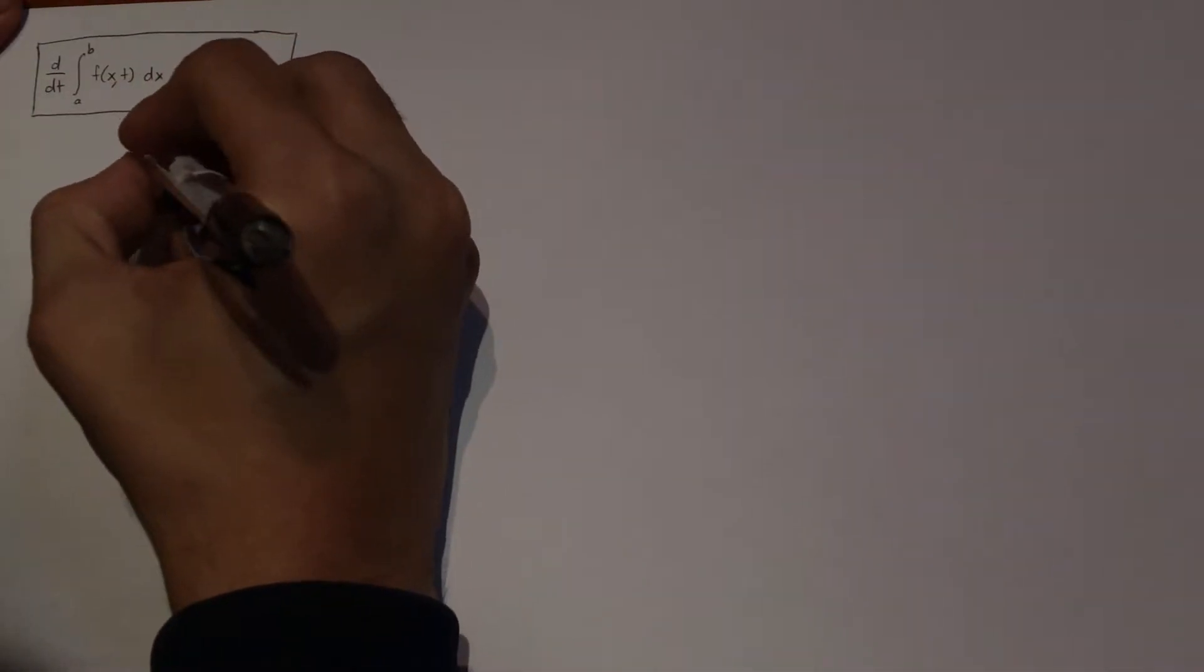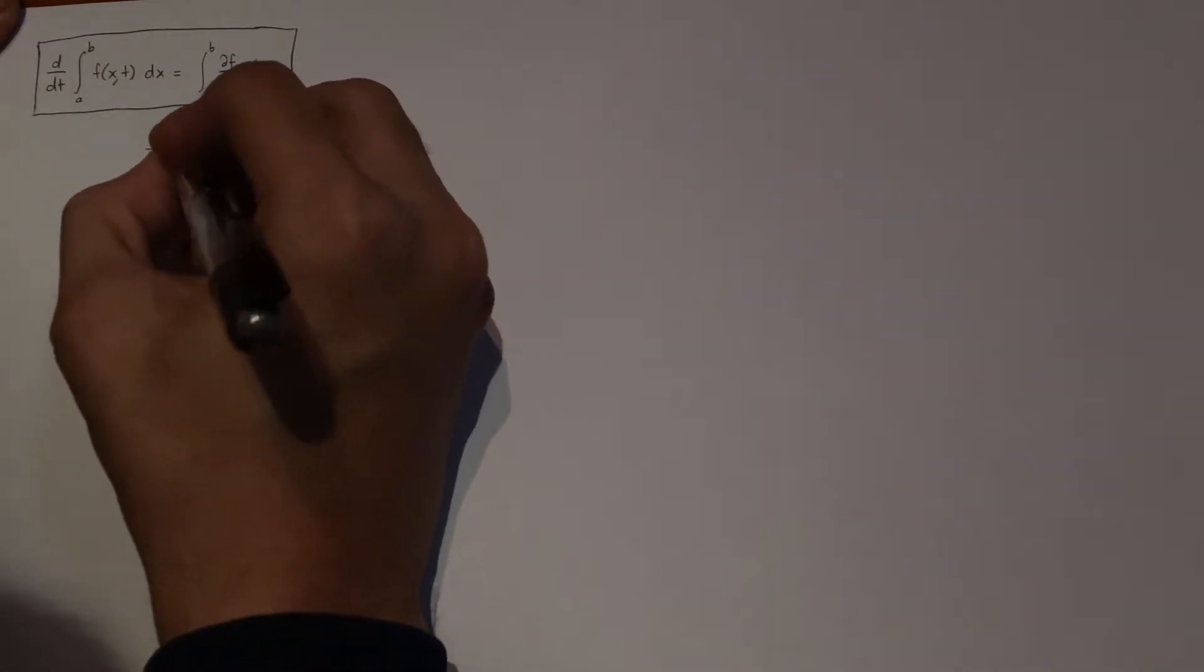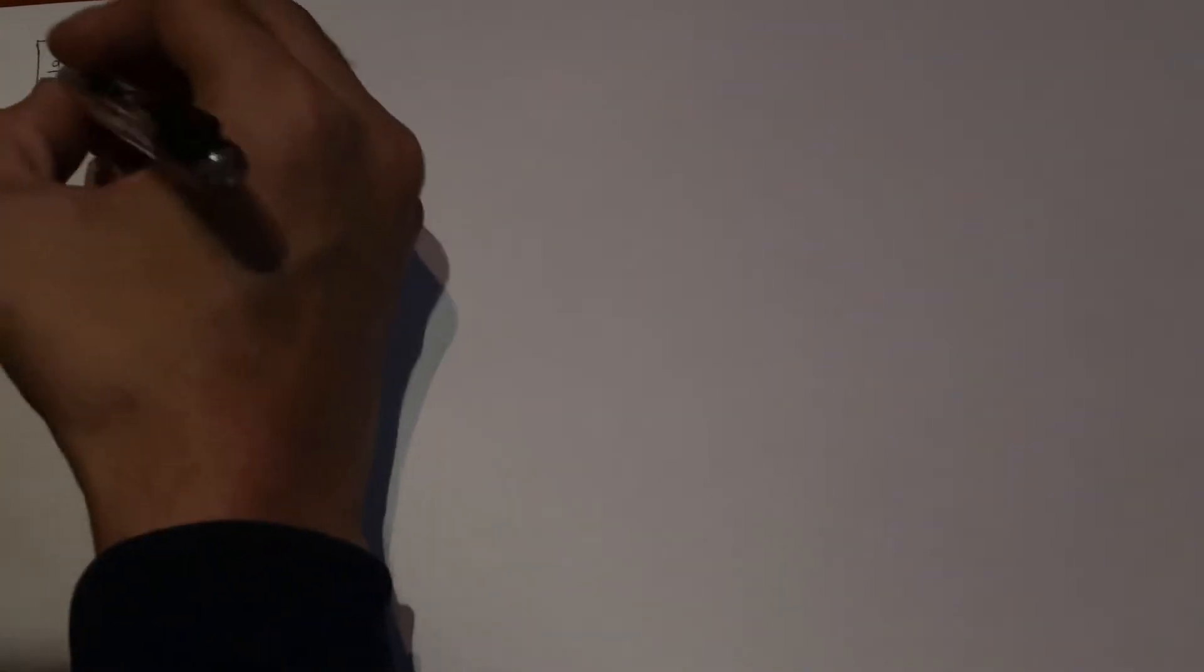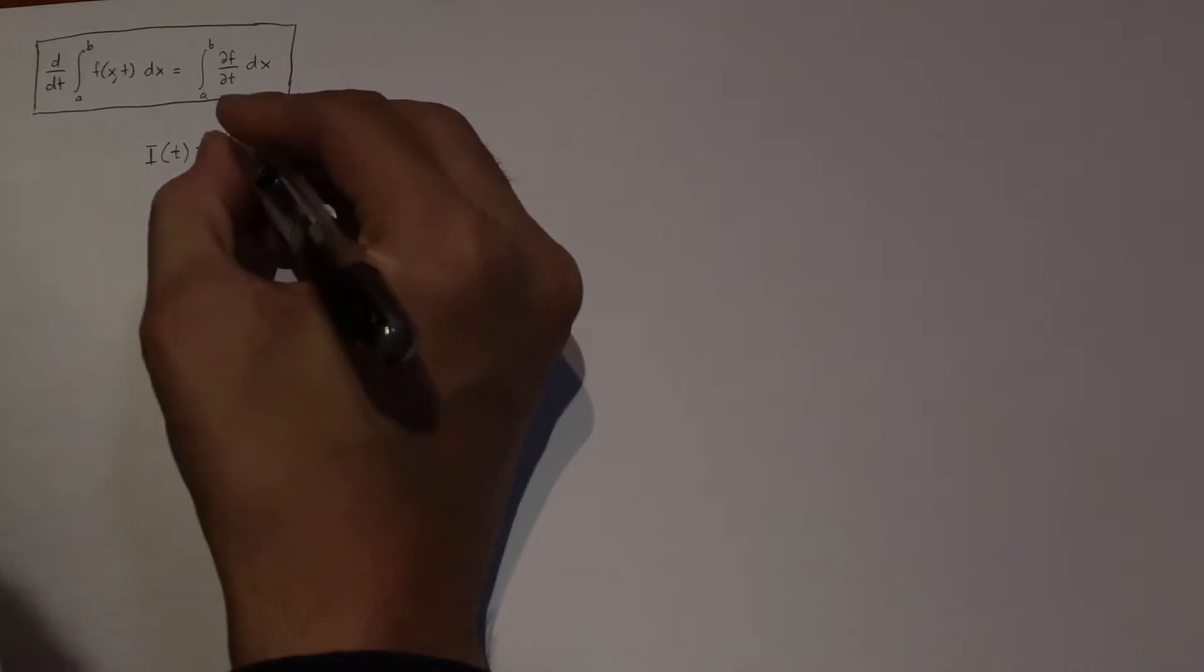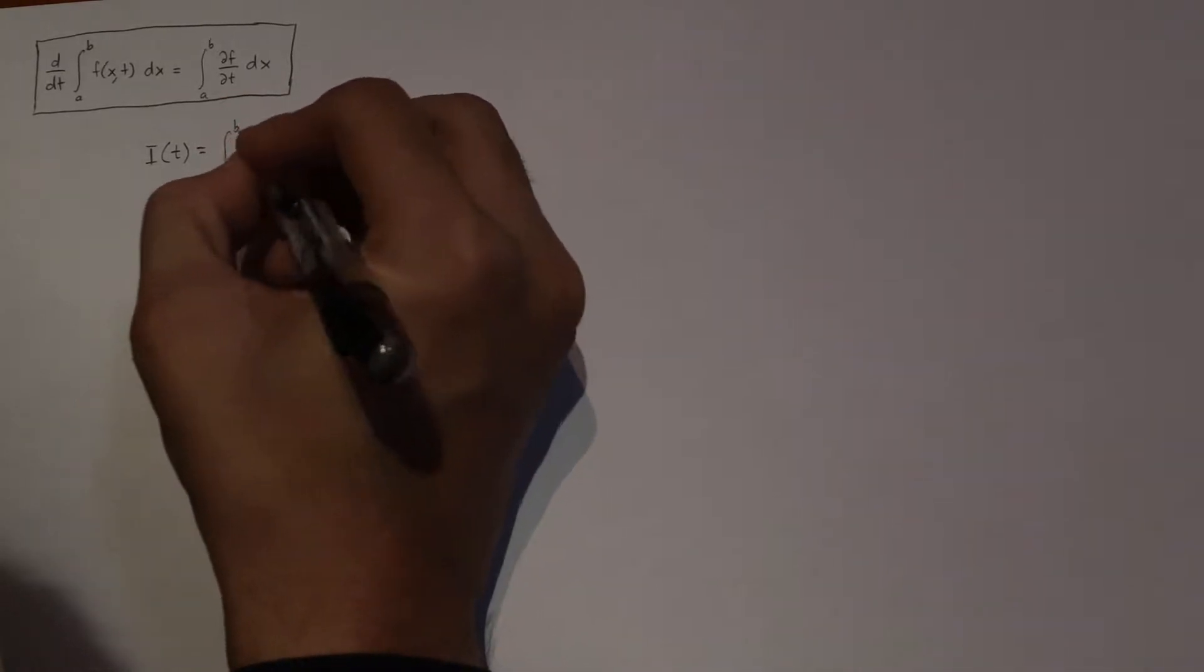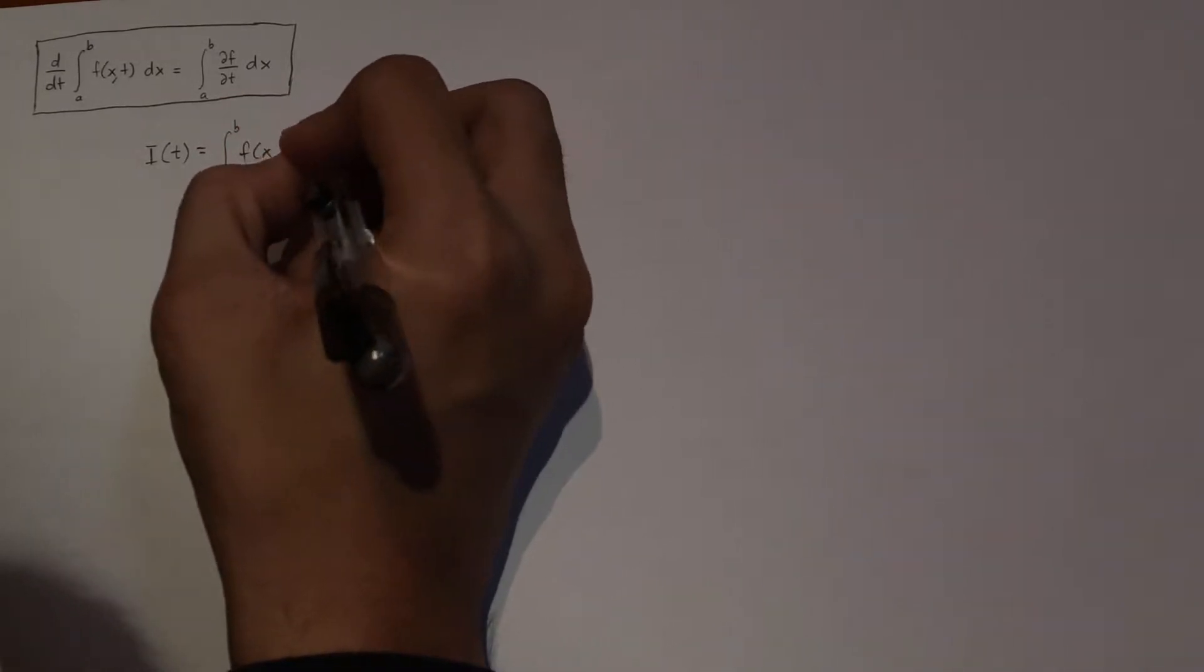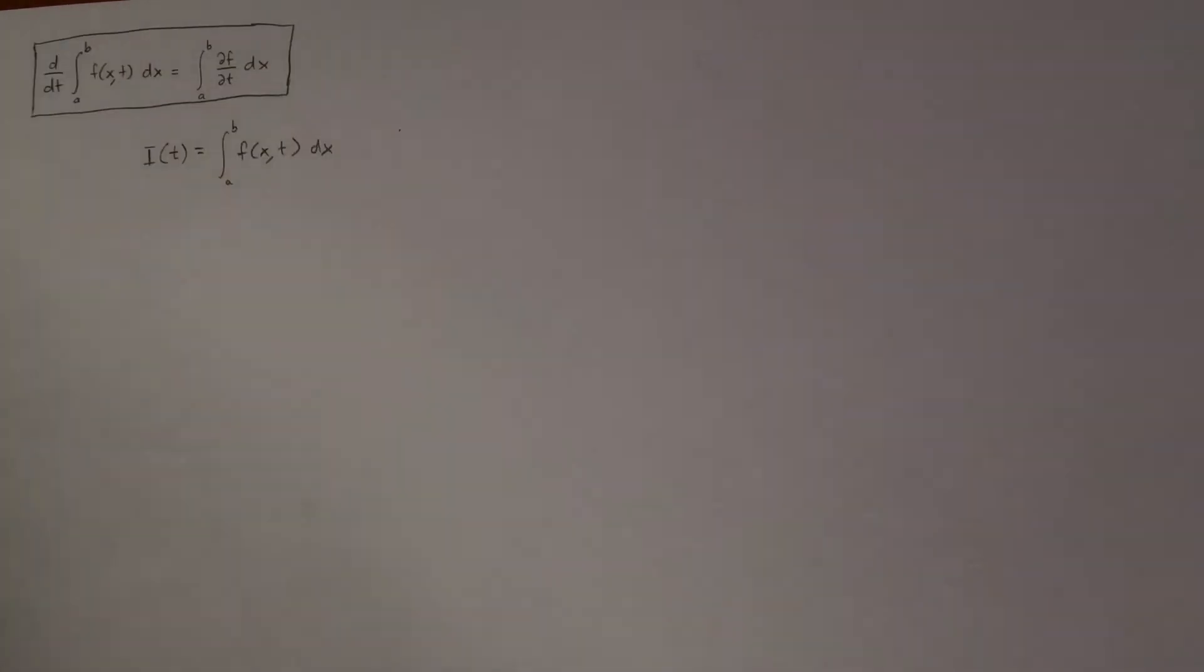Anyways, so first what we're going to do is we're going to define a function. I'm going to define a function called I, which stands for integral. And it's going to be a function which depends on T. And this will equal to just this integral that's inside. So we're just equal to the integral value from A to B of F of X and T dx.